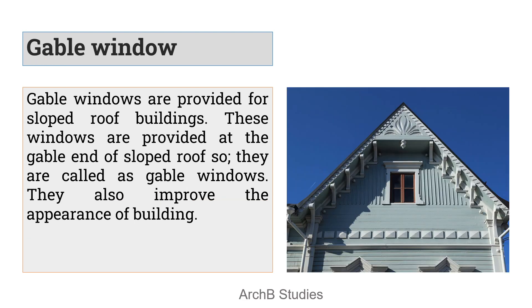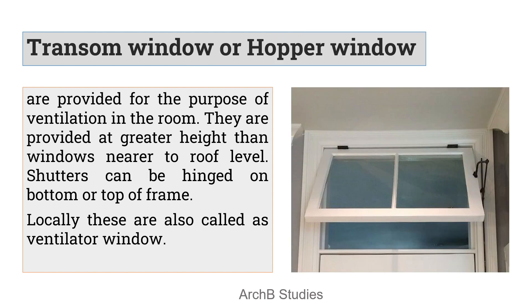Next is the gable window. Gable windows are provided mainly at the gabled end of a pitched roof. The triangular portion at the end of a pitched roof is known as the gable, and a window placed there is known as the gable window. It provides ventilation and also increases the appearance and beauty of the building.